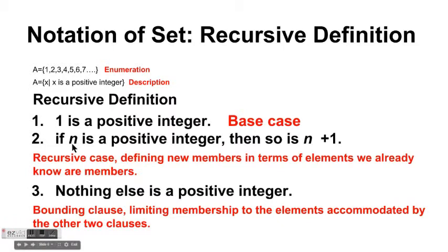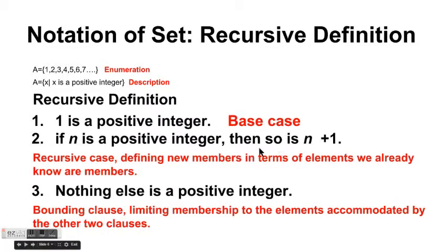So starting from n=1, we know 1+1=2 is a positive integer, then 2+1=3 is a positive integer, and it goes on and on, defining all positive integers. The third clause is a bounding clause, limiting membership to only the elements accommodated by the other two clauses.